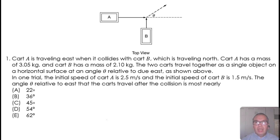Cart A is traveling east when it collides with cart B, which is traveling north. Cart A has a mass of 3.05 kg and cart B has a mass of 2.10 kg. The two carts travel together as a single object on a horizontal surface at an angle theta relative to due east.